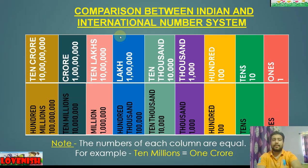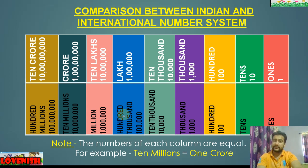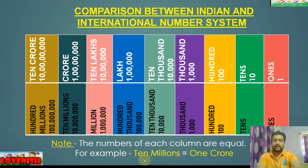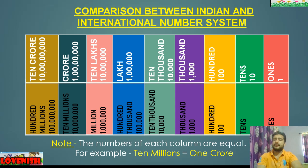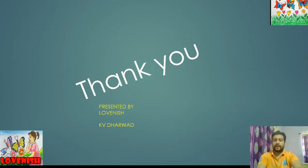Let us compare the Indian and international number systems. Ones, tens, hundreds, thousands, and ten thousands are the same in both. But where the Indian system has lakh, the international system has one hundred thousand. Ten lakh equals one million. One crore equals ten million. Ten crore equals one hundred million. In this class we will primarily use the Indian place value system. Hope you enjoyed and understood the topic.